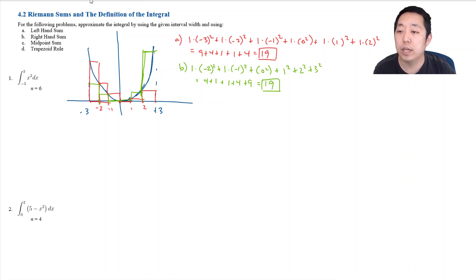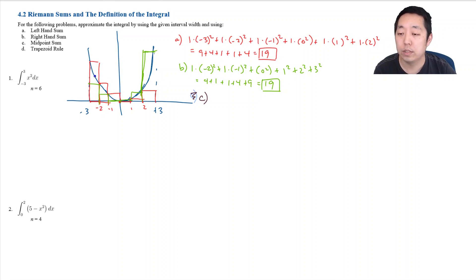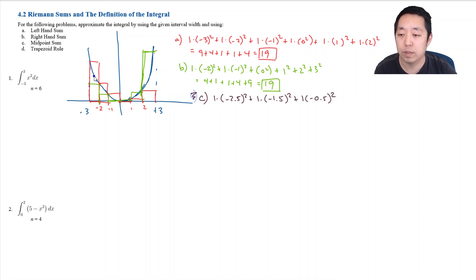For the midpoint rule, rather than using the endpoints, I use the value in between. The height is based on the midpoint of each interval on the x-axis. So my rectangles are centered in each sub-interval.